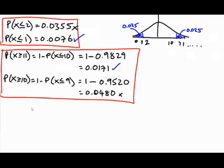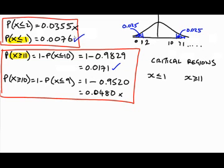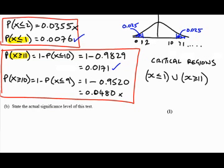I have my critical regions there, the regions for which we will reject H0, and they are x is less than or equal to 1 and also x is greater than or equal to 11. Those are my critical regions. It could be one or the other, so we can add a little bit more notation just to show either of those can be considered the critical region.